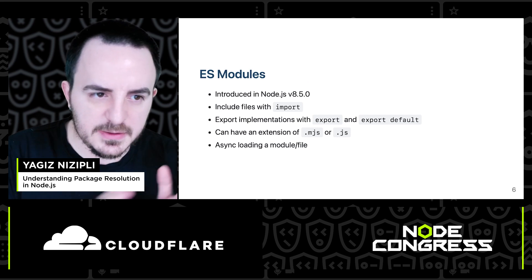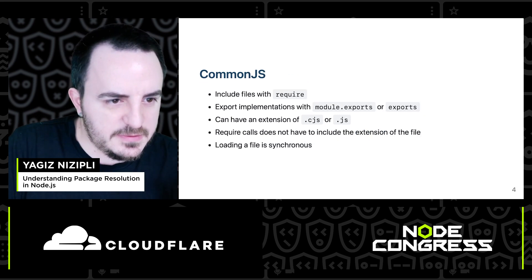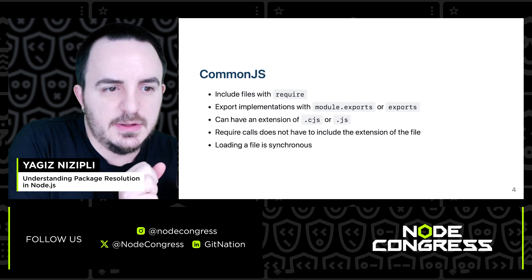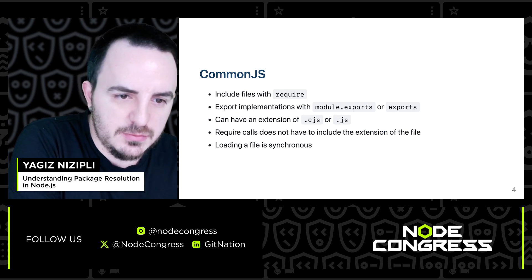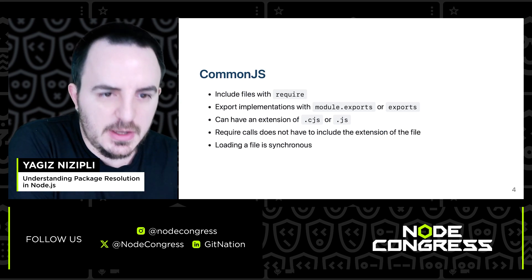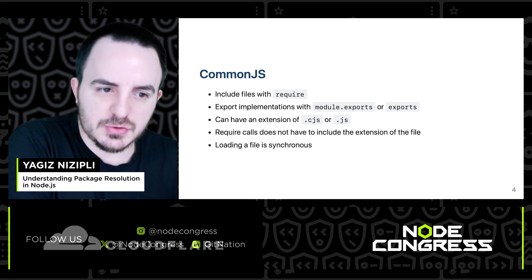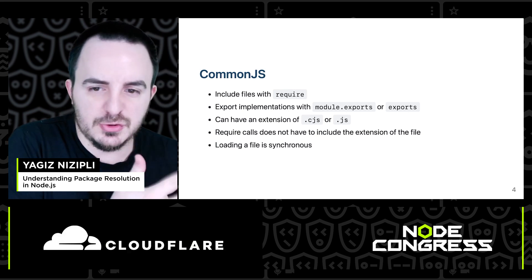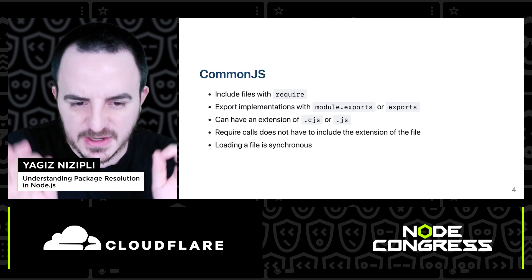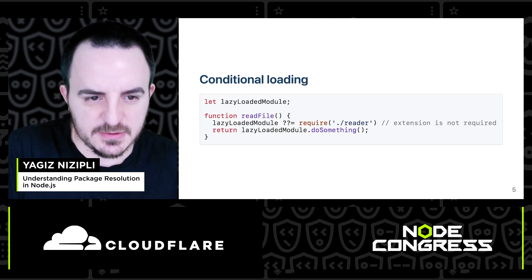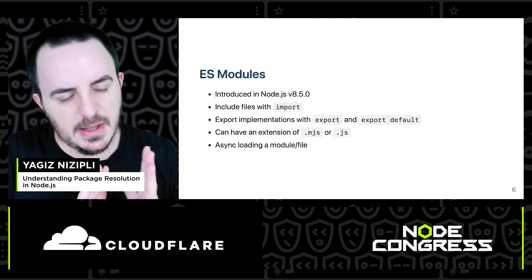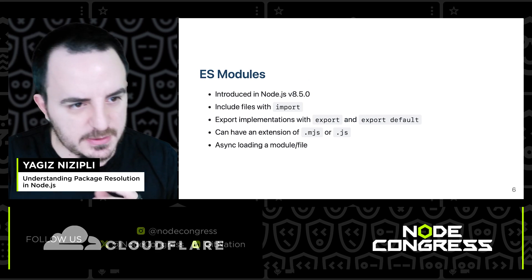So despite CommonJS's approach — where you include additional modules using require and export implementations with module.exports — it can have extensions of .cjs or .js. In ES modules, the idea is quite different. ESM was introduced in Node.js 8.5.0 with an experimental flag.